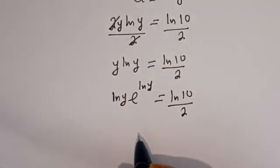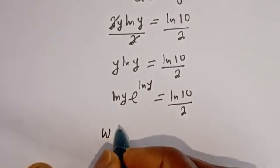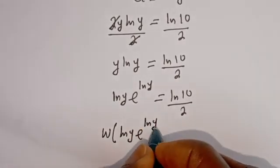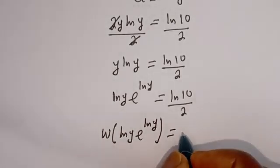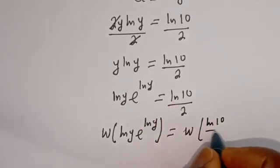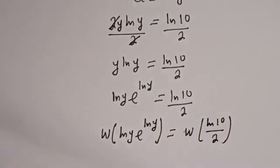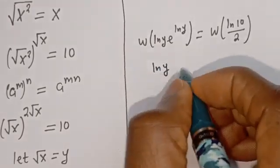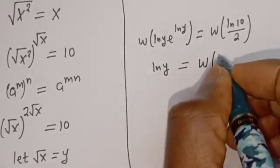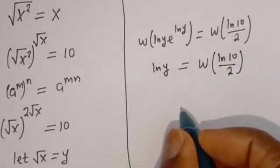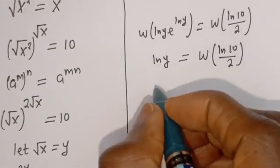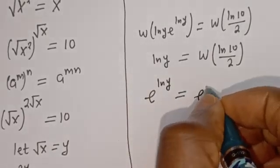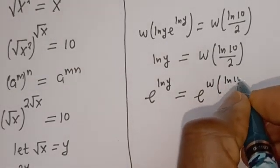Now this is W bracket of ln of 10 over 2. We've introduced our Lambert W function, and so ln of y is equal to W of ln of 10 over 2. Then let's introduce the exponential: e to the power of ln of y is equal to e to the power of W bracket ln of 10 over 2.